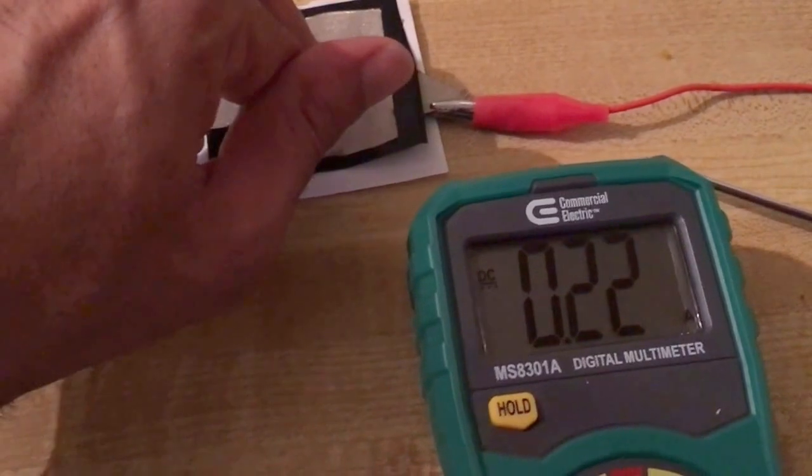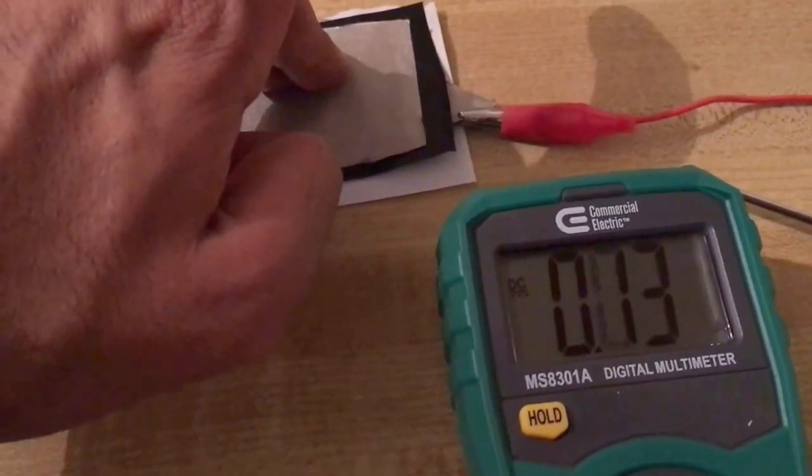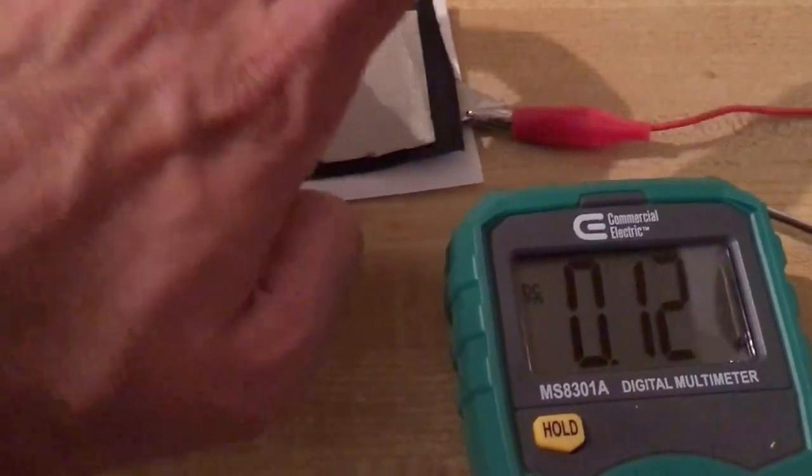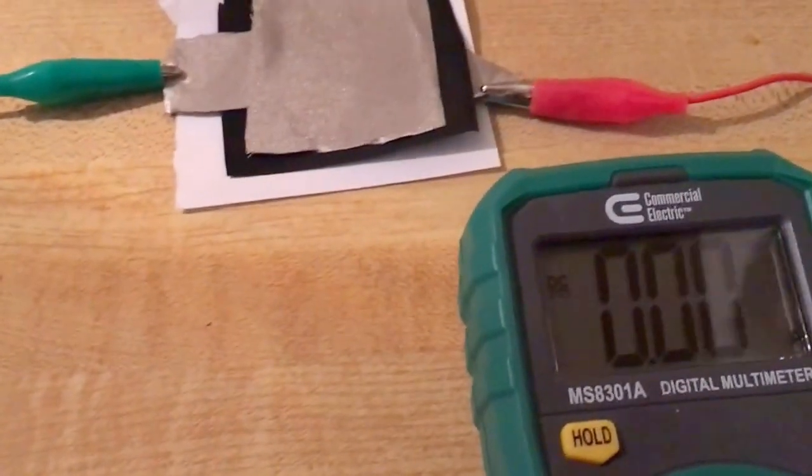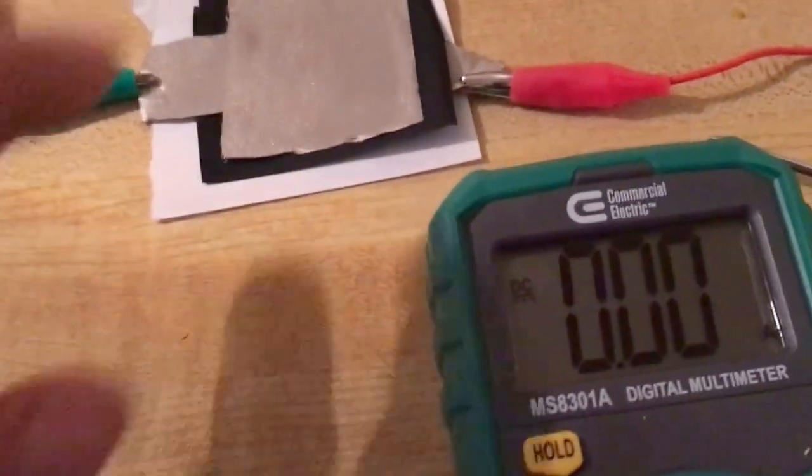I'm going to take one finger off at a time and you can see that as I take my fingers off, the amount of electricity that goes through goes back to zero when all my fingers are off.